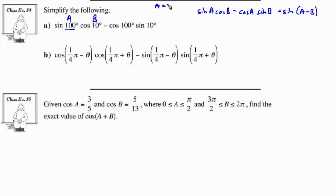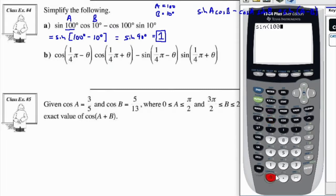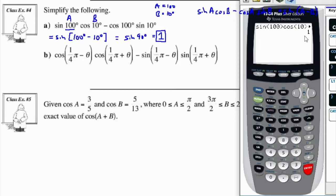So using a as 100 and b as 10, this equals sine of 100 degrees minus 10 degrees, which is sine of 90 degrees. And sine of 90 degrees is equal to 1. We can verify this on the calculator: in degree mode, sine(100) times cos(10) minus cos(100) times sine(10) gives us 1.